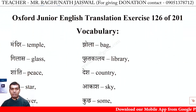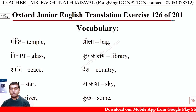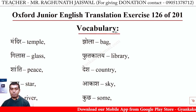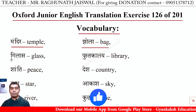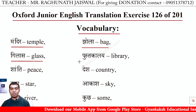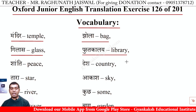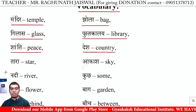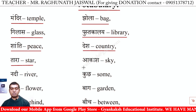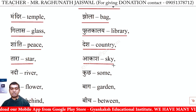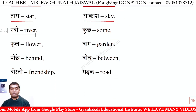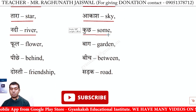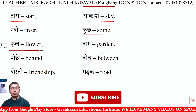Vocabulary: Mandir — Temple. Jhola — Bag. Glass — Glass. Pustakale — Library. Shanti — Peace. Desh — Country. Tara — Star. Akash — Sky. Nadhi — River. Kuch — Some. Phool — Flower.